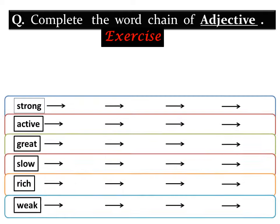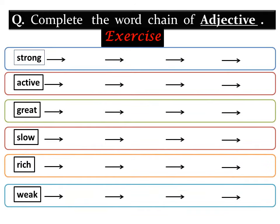First question: complete the word chain of adjectives. If you want to do this exercise, you can take a screenshot. Examples given: strong, active, great, slow, rich and weak.